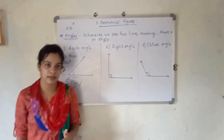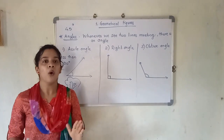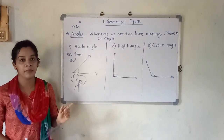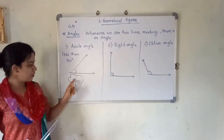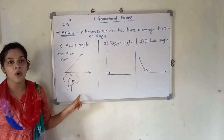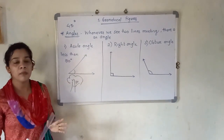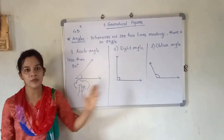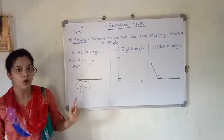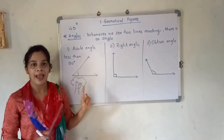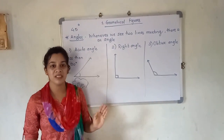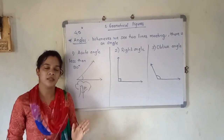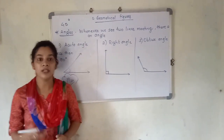Examples of acute angle: a crocodile opening his mouth, or the angle formed by branches of a tree. If the branches are wide apart, you would use the term obtuse angle — but we will study that later. Acute angle means the angle which measures less than 90 degrees.